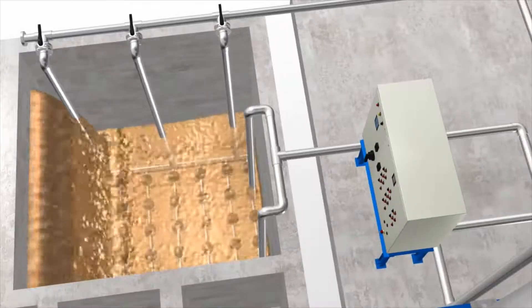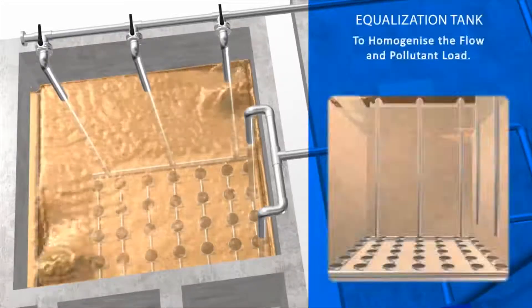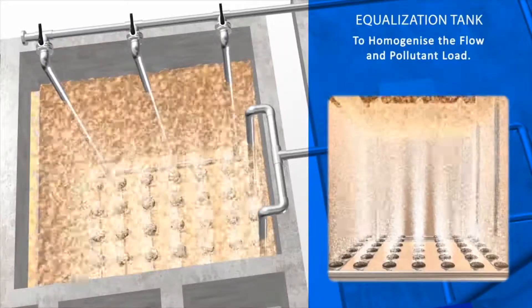From here, the sewage is pumped into the equalization tank where the flow and pollutant load of sewage are homogenized.